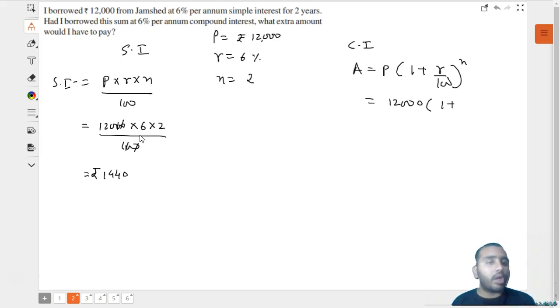Multiplied by (1 + 6/100) to the power 2. We can very simply find the amount from here. The value of amount is 13,483.20.